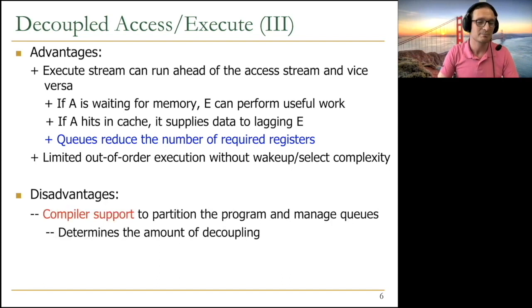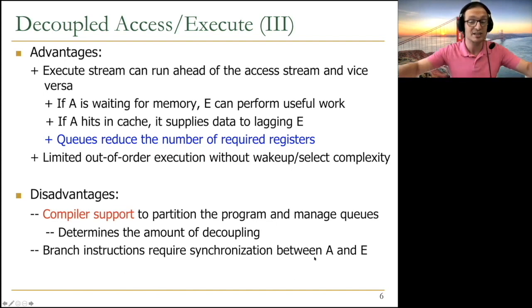Everything comes with disadvantages. Compiler is important here. Compiler was important for VLIW, compiler is important for modern out-of-order processors, compiler is important for decoupled access and execute. You need to have compiler support to partition the program and manage the queues. This determines the amount of decoupling you can get. People have developed interesting compilation techniques for this, not as much as VLIW has done, and not as much as work that's going on in systolic arrays today. But still, compiler is important.